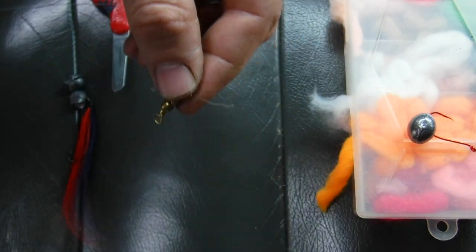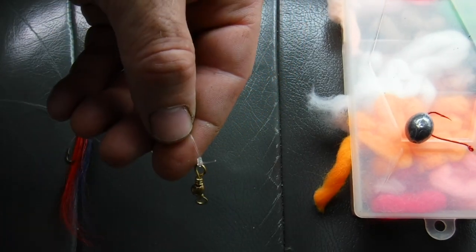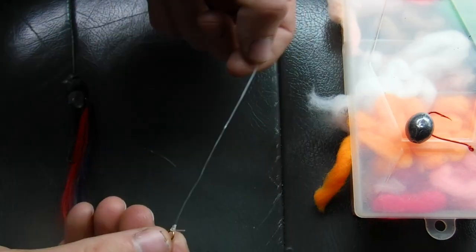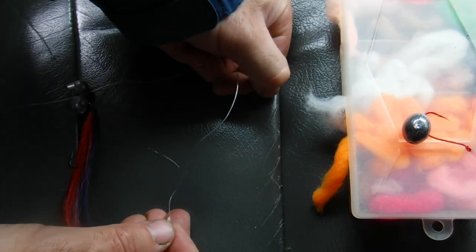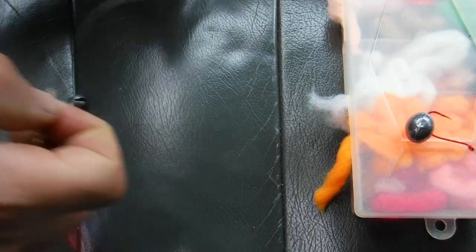And then you can cut that off. Your scissors can come in handy. Take that tag end of that line and cut that off. I typically run a four to six foot leader when I'm fishing reds here at the Kenai.